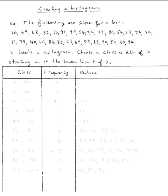The topic is creating a histogram. So let's do this example. The following are scores for a test: 70, 69, 68, all the way to 94. We need to create a histogram. Also we need to choose a class width of 10 starting with the lower limit of 0.